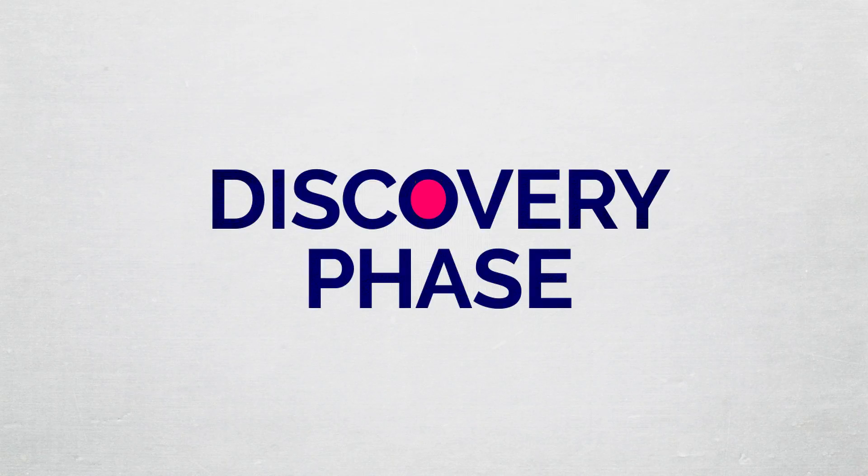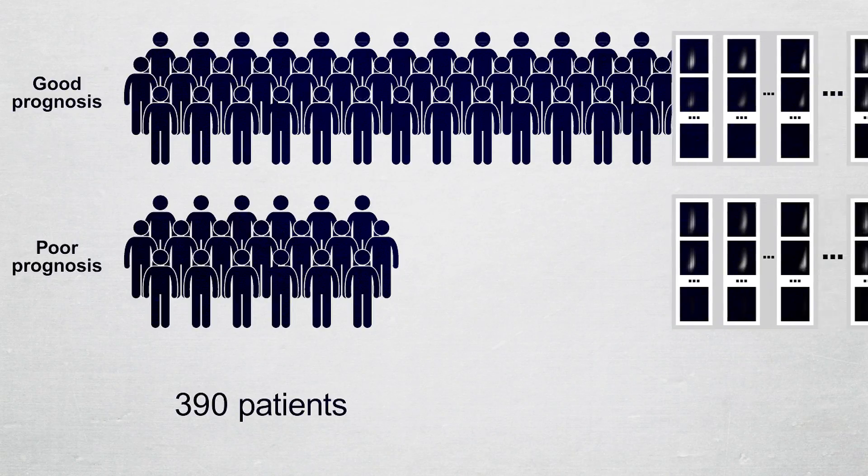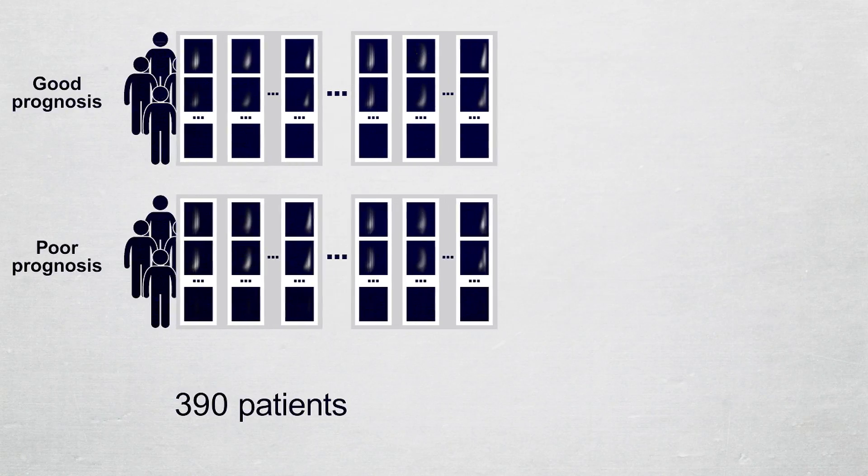In the discovery phase, we learn how texture patterns correlate with patient prognosis. This phase begins by sorting the cohort of 390 patients according to their prognosis. The GLEM4D is then computed for each patient.